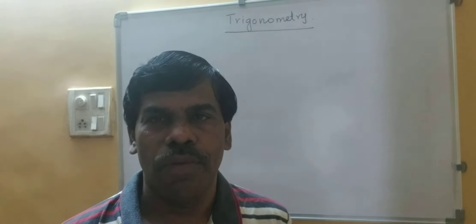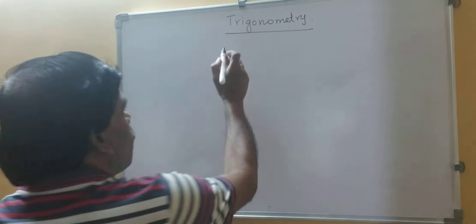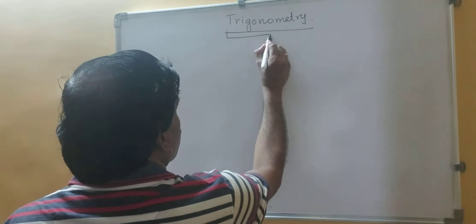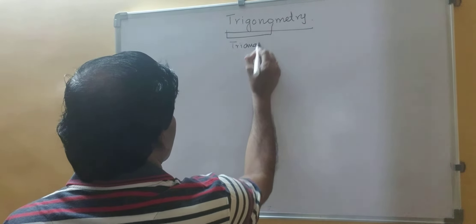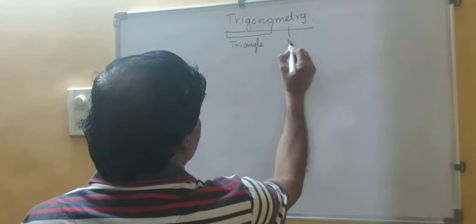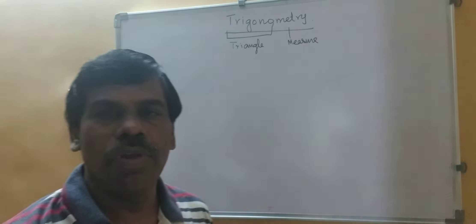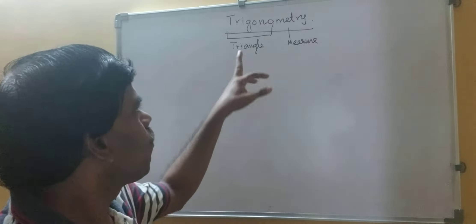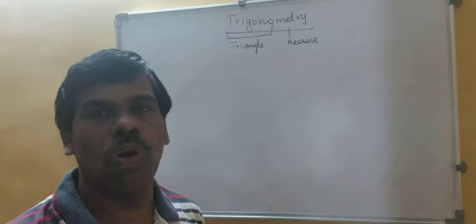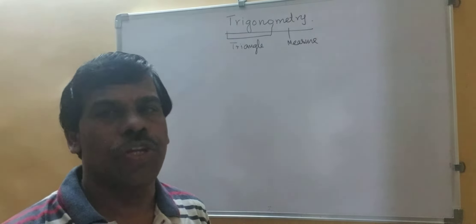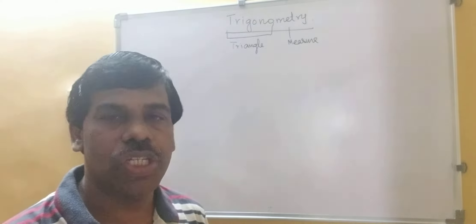Students, you will see today what is trigonometry. From the name itself, we will divide it into two parts. Trigono means triangle, metry means measure. That means we are trying to measure the sides and angles of the triangle. So trigonometry means the measurement of triangle.